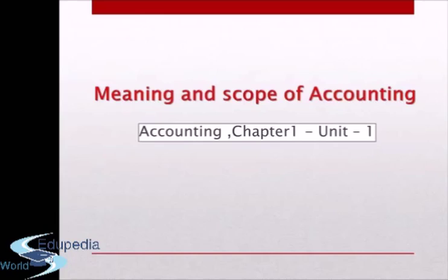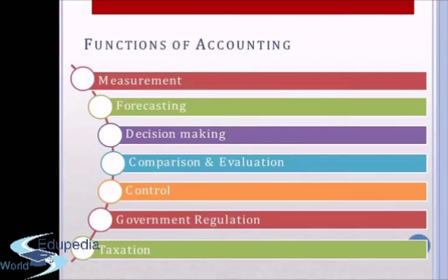Let's start with the first topic: Functions of Accounting. These are the main functions and purposes for which accounting is done. Number 1 is Measurement. Number 2 is Forecasting. Then comes Decision Making, Comparison and Evaluation, Control, and Government Regulation and Taxation. These are the main functions of accounting.